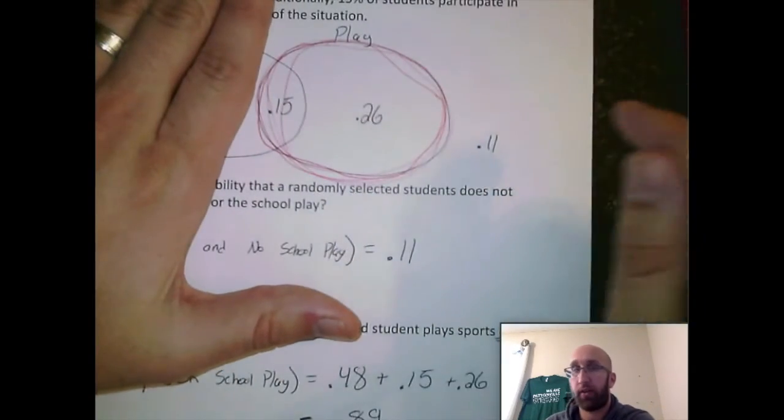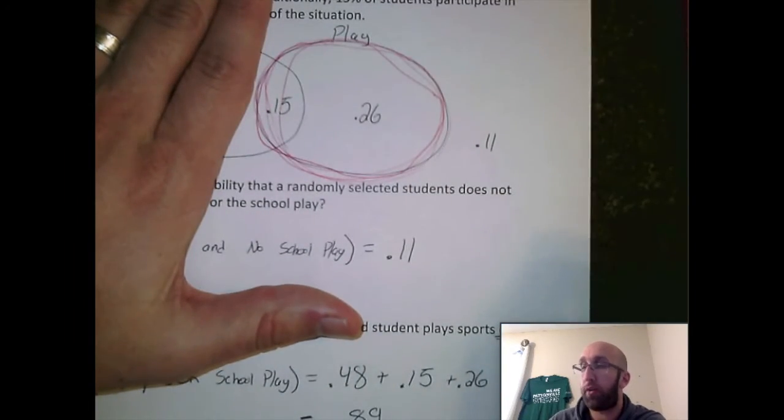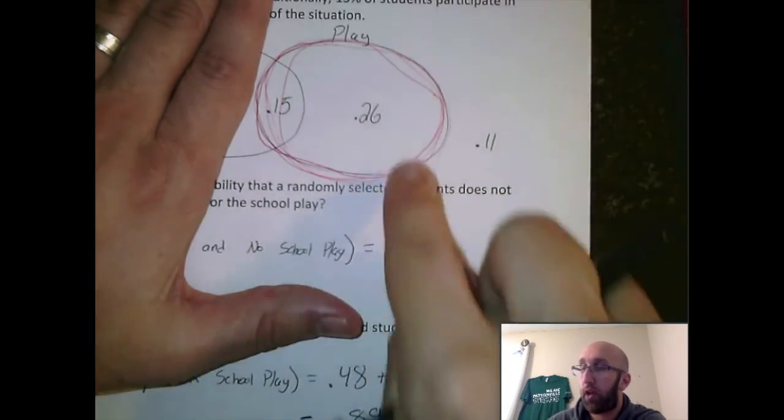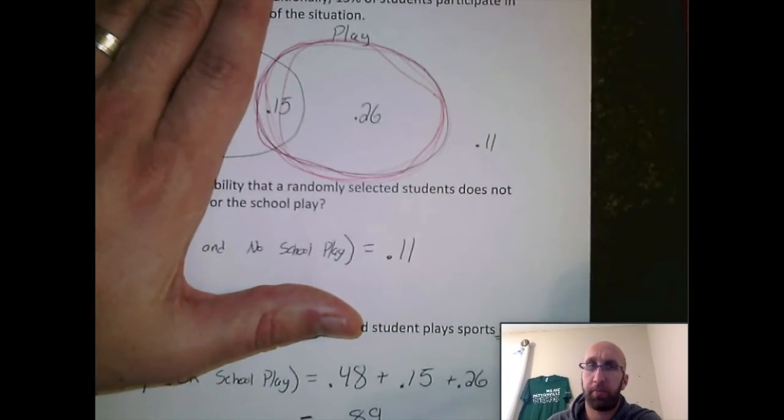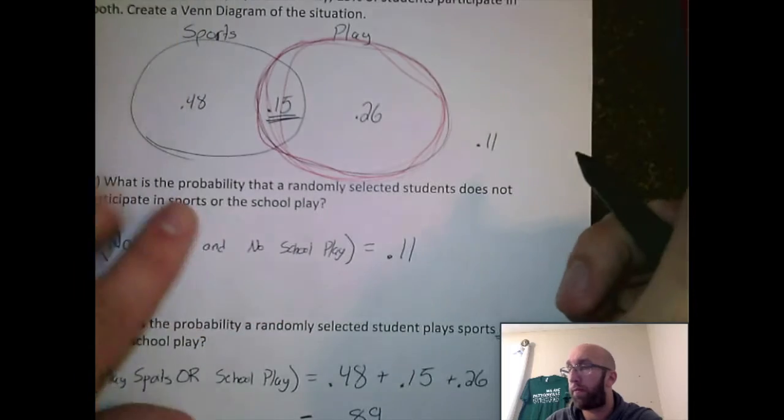So we're locked in this circle. I need to know, given that they're in the circle, what is the probability that they play sports? So inside the circle, which of these numbers represents playing sports? That's that 0.15. This 0.15 represents students that do sports and the school play.